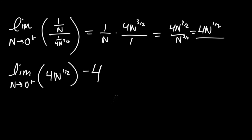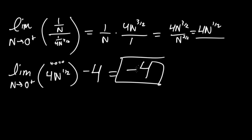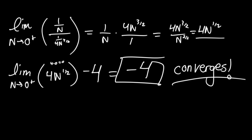Don't forget the minus 4 from before. Since the limit term equals 0, we get 0 minus 4 = negative 4. So the integral converges to -4. There is no plus C because this is a definite integral. This is the solution to the integral from 0 to 1 of ln(x)/√x dx.